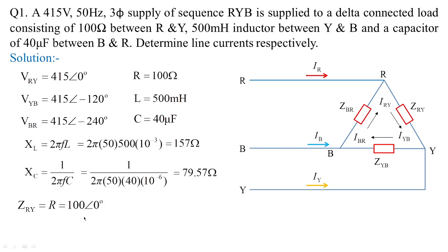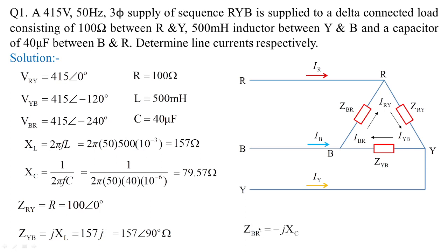The impedance Z_RY is 100 ohms, or 100 at angle 0 degrees in polar form. Z_YB in polar form is 157 at angle 90 degrees — the inductive reactance in both rectangular and polar form. Z_BR is 79.57 at angle minus 90 degrees, representing the capacitive reactance.